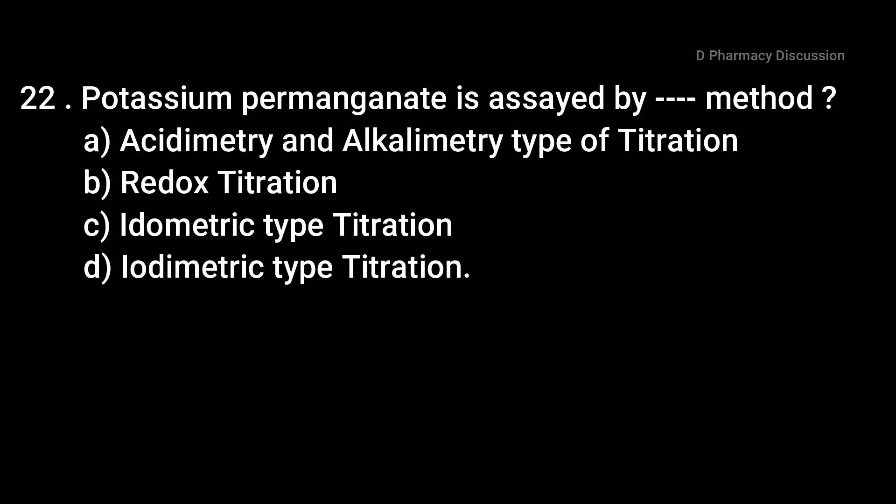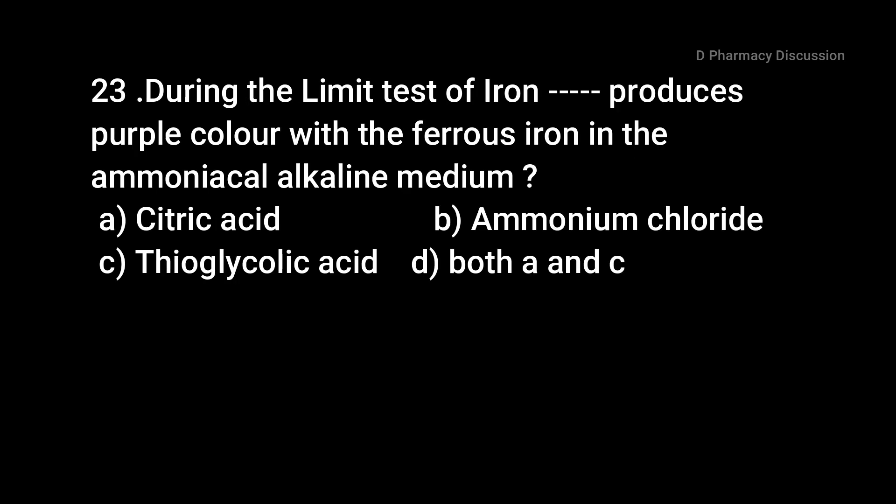Question 22: Potassium permanganate is assayed by dash method. Options: A: acidimetry and alkalimetry, B: redox titration, C: iodometric titration, D: iodimetric titration. Correct answer is option B, redox titration.